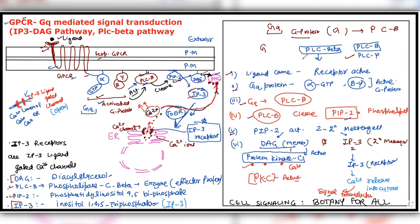One more thing to note: PLC-beta enzyme itself also requires calcium to function. Even before the channel opens fully, calcium is already present in the cytoplasm at a basal level. So phospholipase C-beta has calcium as its cofactor. There is no confusion here — this is separate from the ER calcium channel. I mentioned individually that phospholipase C also needs calcium. But when IP3 opens the calcium channel fully, it enables many pathways through signal transduction, and that calcium also helps activate protein kinase C.